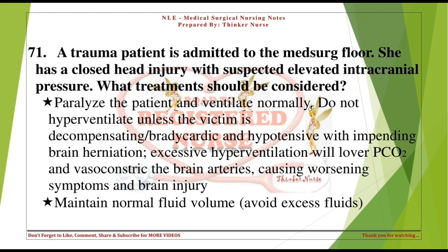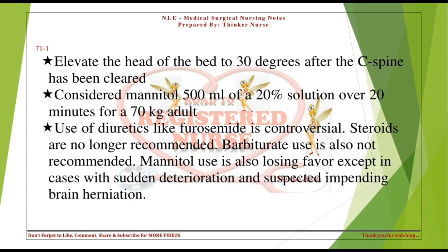Maintain normal fluid volume and avoid excess fluids. Elevate the head of the bed to 30 degrees after the C-spine has been cleared. Consider mannitol 500 mL of a 20% solution over 20 minutes for a 70 kg adult. Use of diuretics like furosemide is controversial. Steroids and barbiturates are no longer recommended. Mannitol use is also losing favor except in cases with sudden deterioration and suspected impending brain herniation.